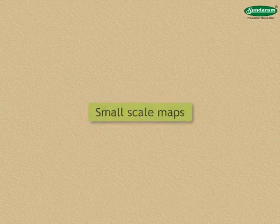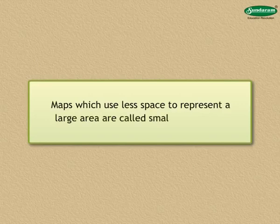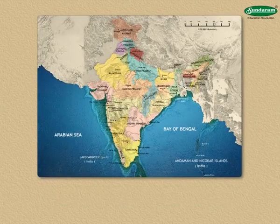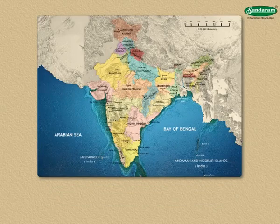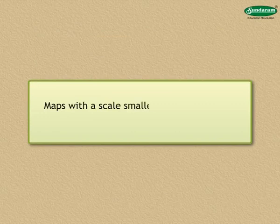Small scale maps: Maps which use less space to represent a large area are called small scale maps. They give information about vast areas. Examples of such maps are regional maps, maps of the countries or of the world. Generally, maps with a scale smaller than 1 is to 10,000 are called small scale maps.